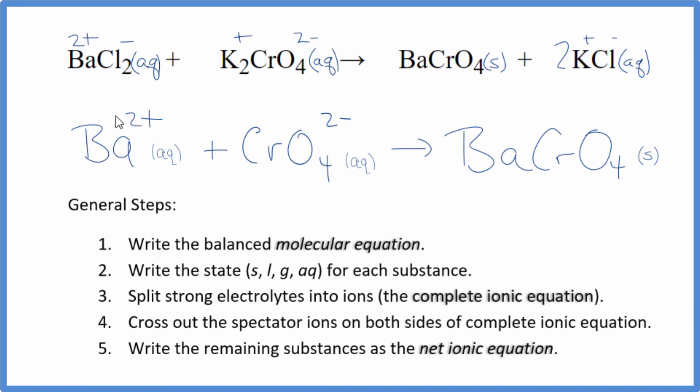You'll notice charge is conserved. We have a 2+, 2-. That gives us a net charge of zero on this side. This is a neutral compound, net charge of zero. And the atoms are balanced as well.